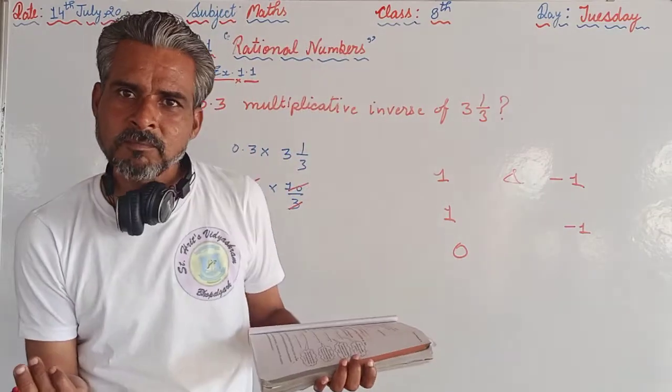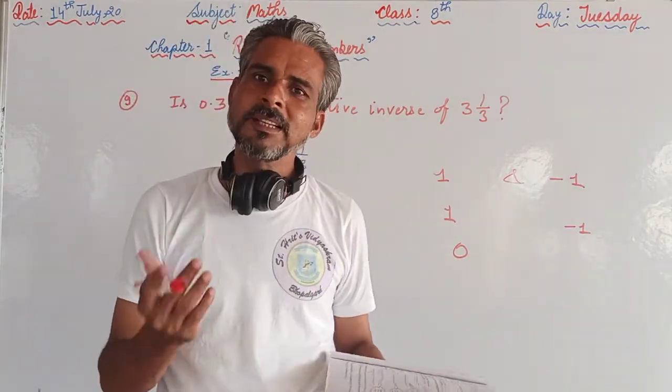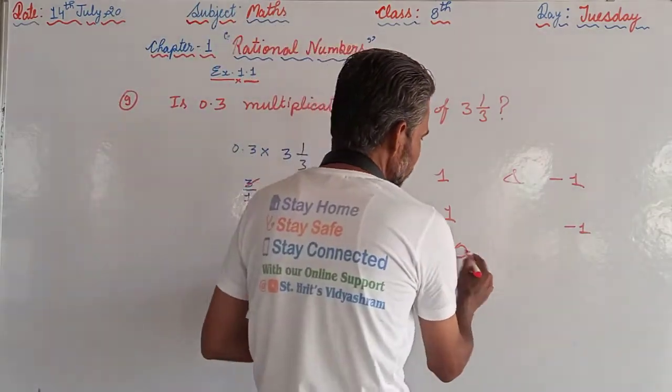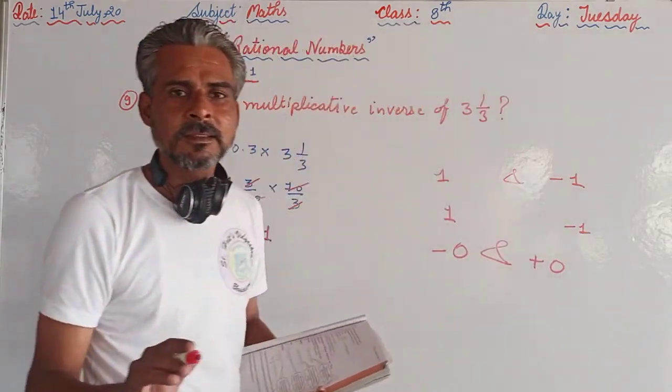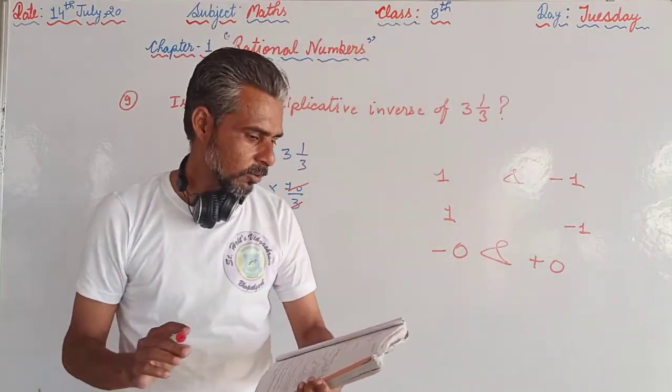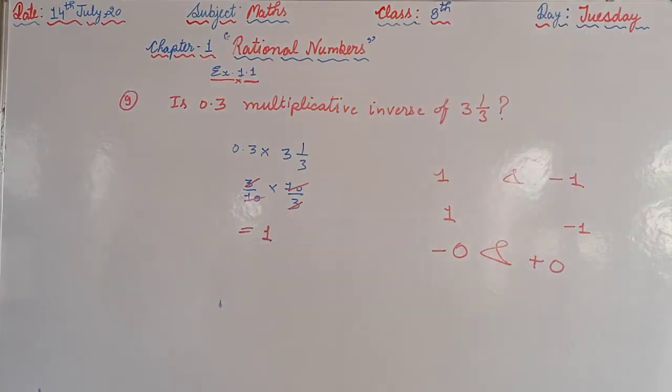Because 0, the value is same whether it is negative or positive. Whether it is minus 0 or plus 0, that doesn't affect anything. So 0 is the only rational number which is equals to its negative.